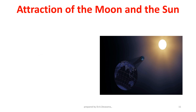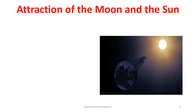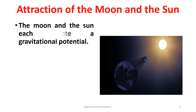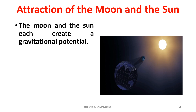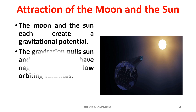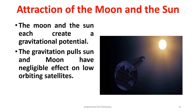Attraction of the moon and the sun. The moon and the sun each create a gravitational potential. The gravitational pull of the sun and moon have negligible effect on low orbiting satellites, but they affect satellites in geostationary orbit.